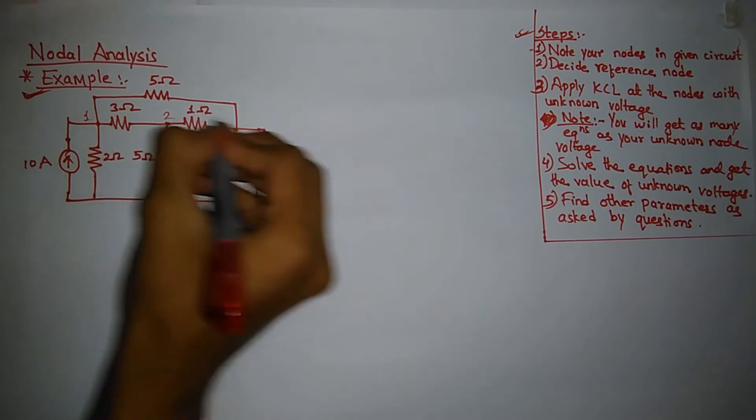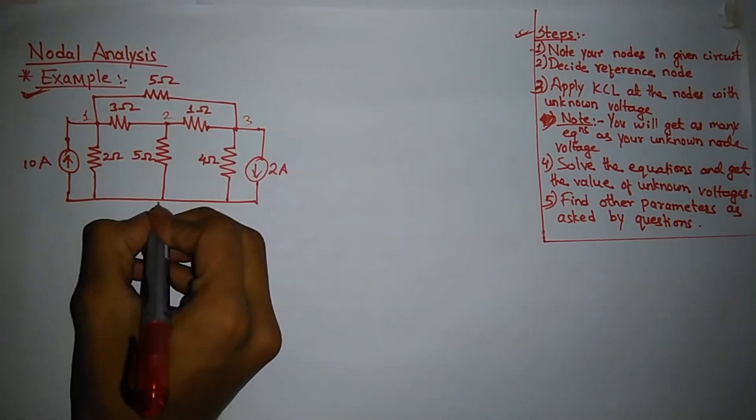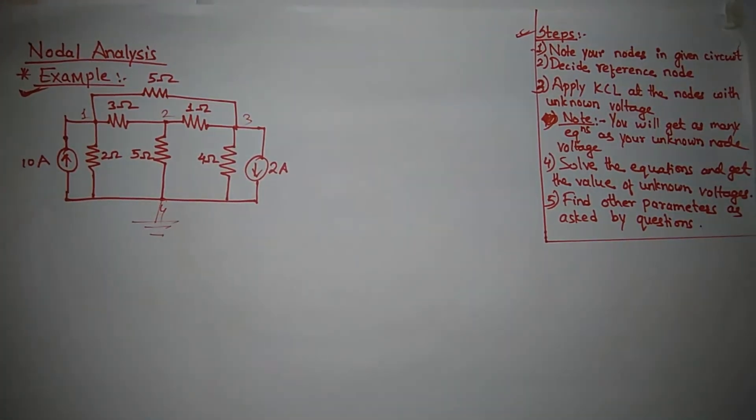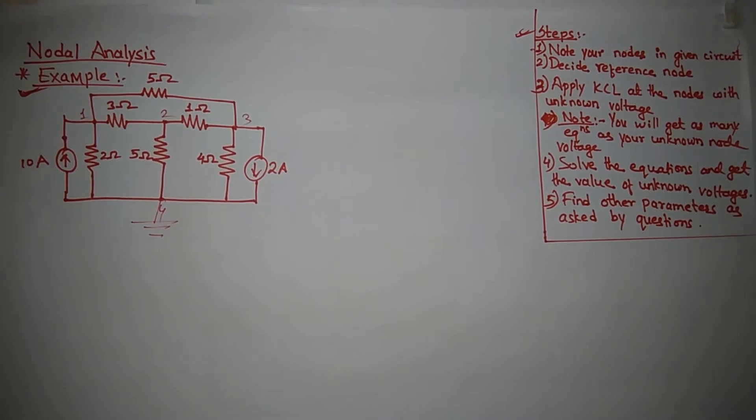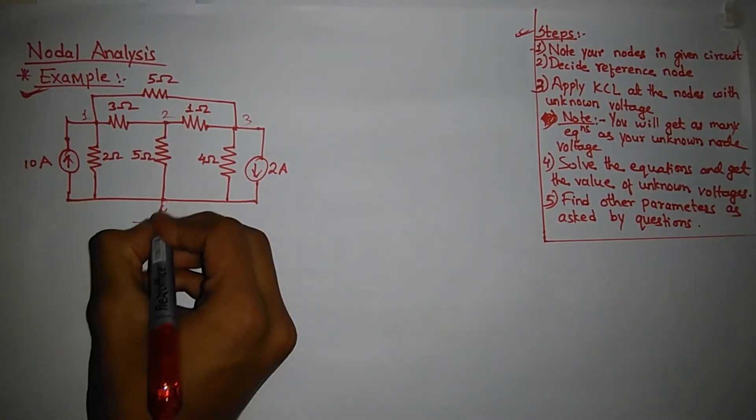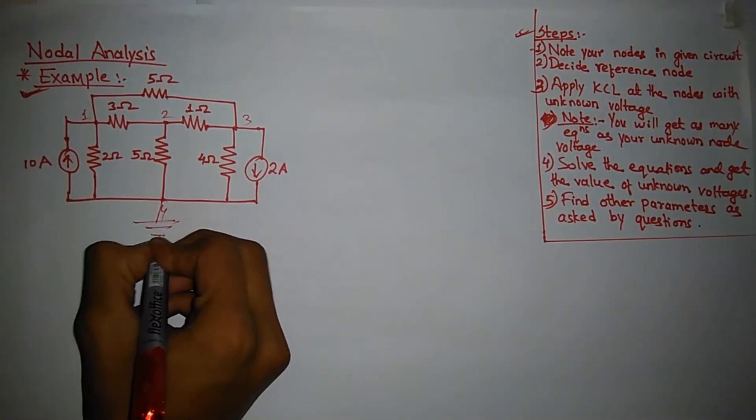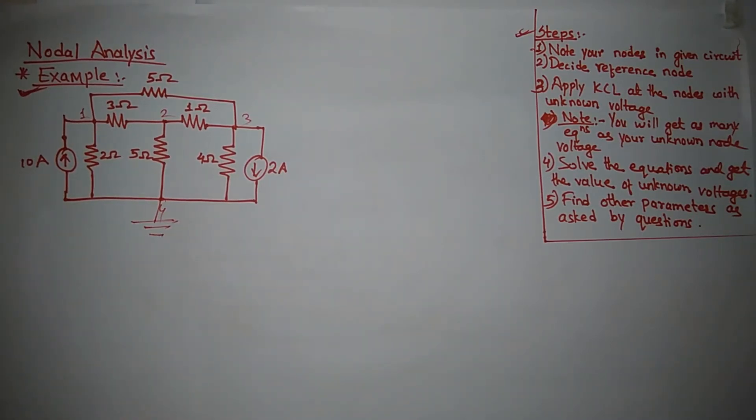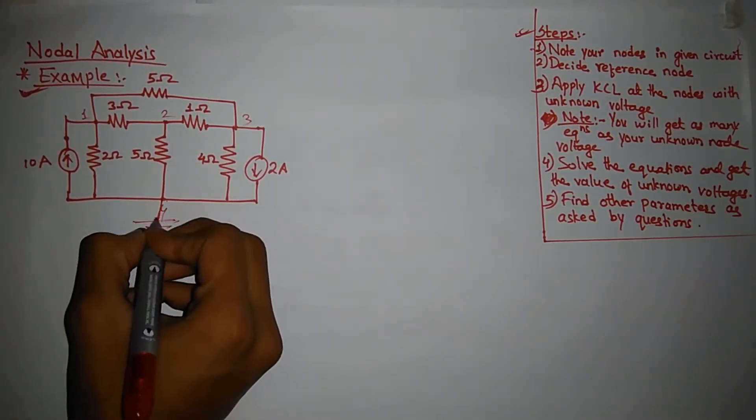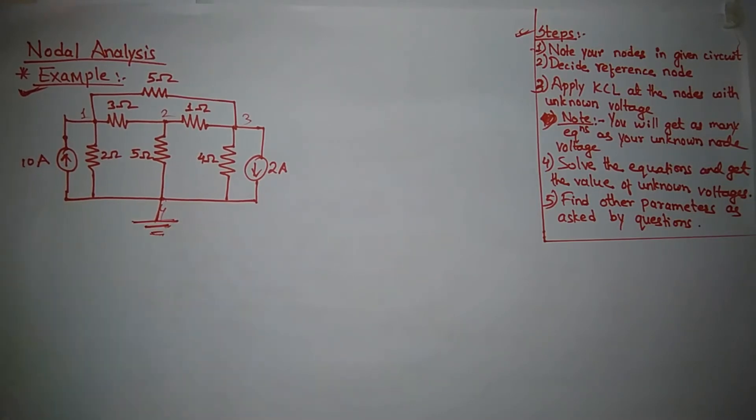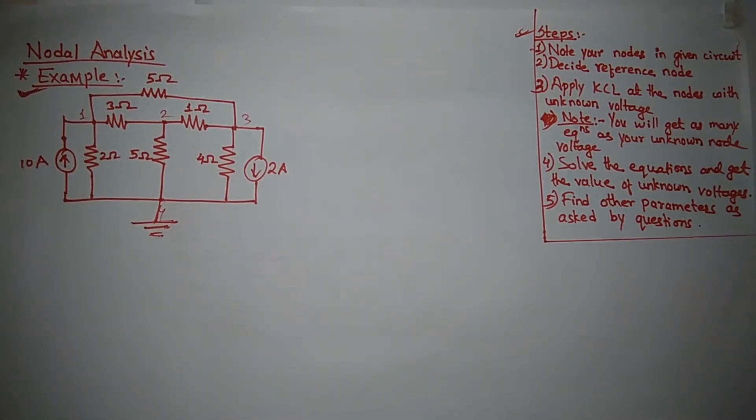Step number two: decide your reference node. I'll decide my reference node at node four. You can do it at any other node too, since we will not face any problem because we have all unknown voltages, so it does not matter where you consider your reference node. However, I will consider my reference node at node four.